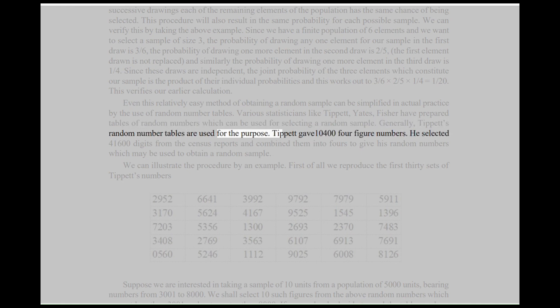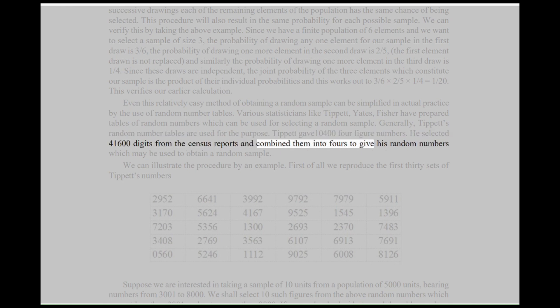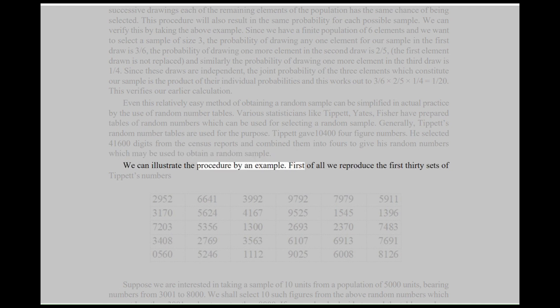Various statisticians like Tippett, Yates, and Fisher have prepared tables of random numbers which can be used for selecting a random sample. Generally, Tippett's random number tables are used for the purpose. Tippett gave 10,400 four-figure numbers. He selected 41,600 digits from the census reports and combined them into fours to give his random numbers, which may be used to obtain a random sample. We can illustrate the procedure by an example.